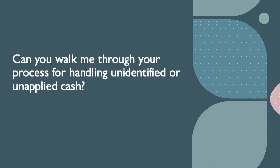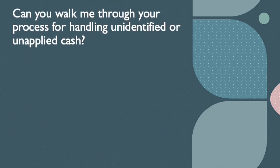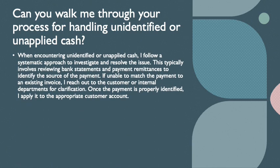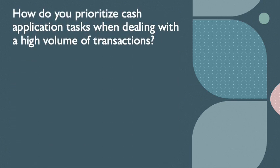The interviewer may ask: can you walk me through your process for handling unidentified or unapplied cash? You can say: when encountering unidentified or unapplied cash, I follow a systematic approach to investigate and resolve the issue. This typically involves reviewing bank statements and payment remittances to identify the source of the payment. If unable to match the payment to an existing invoice, I reach out to the customer or internal departments for clarification. Once the payment is properly identified, I apply it to the appropriate customer account.